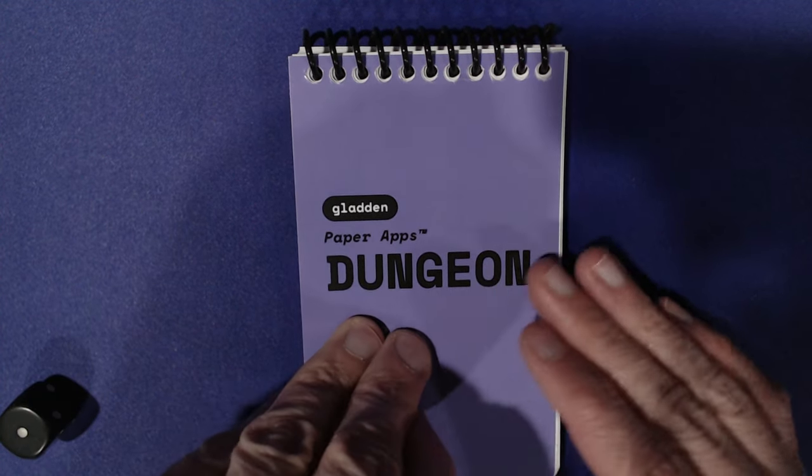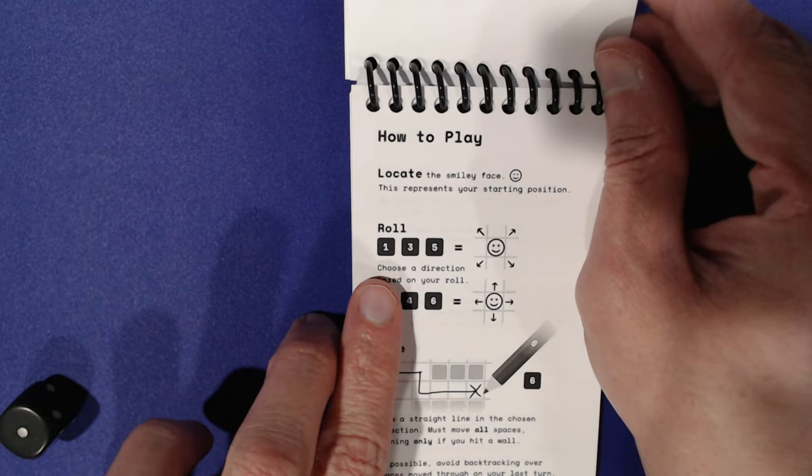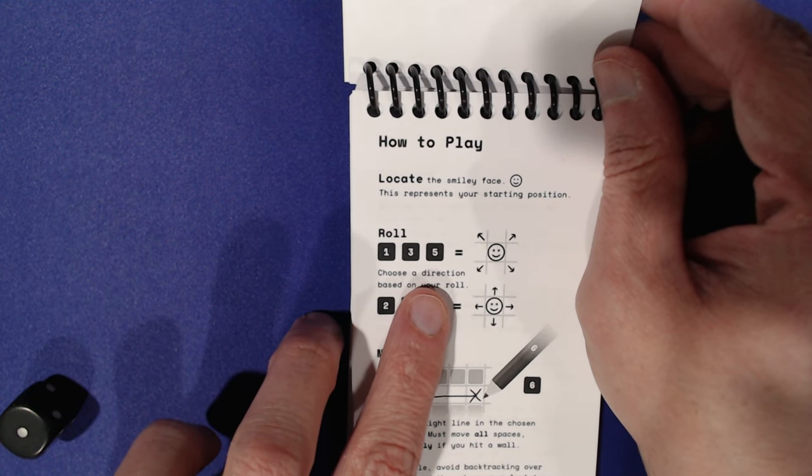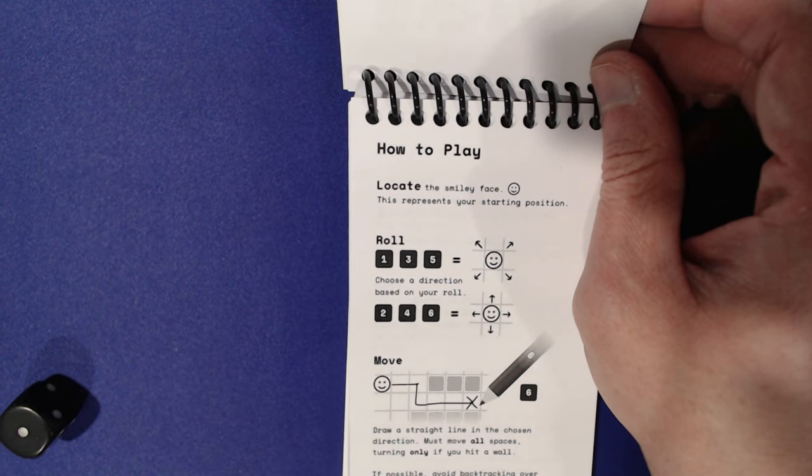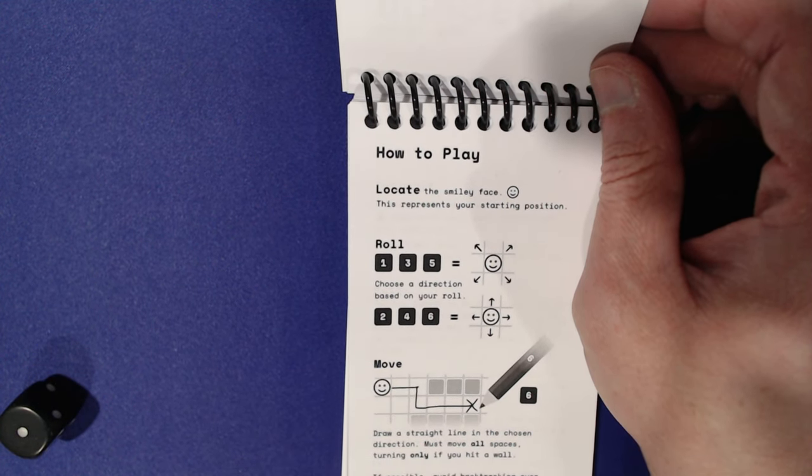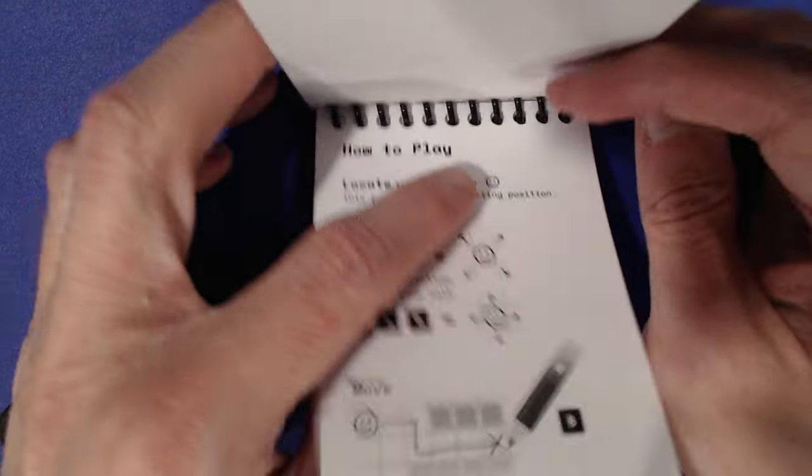So this is just, they print these off I think uniquely for each person that does it. And then it's just a little solo go through the thing. For odds we're going to go diagonal. Evens we're going to go straight. You move until you hit a wall on that roll. And then you just continue onward.